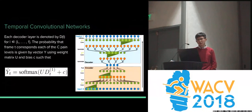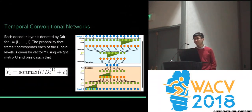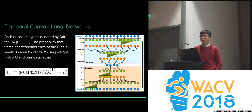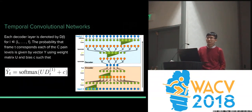The basic approach for the Temporal Convolution Network is: once you apply 2D-CNN to extract features for every single frame, you get a 1D feature vector. Instead of using LSTM or a recurrent neural network, you just apply 1D convolution over the 1D feature vector. It turns out this works well for temporal segmentation.